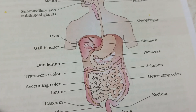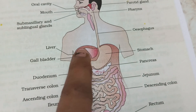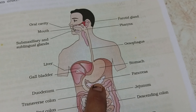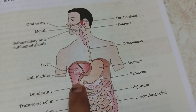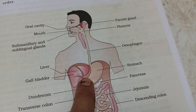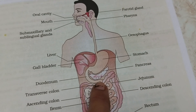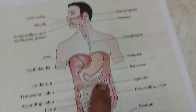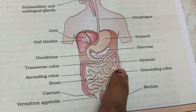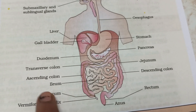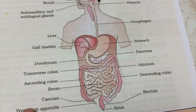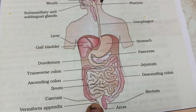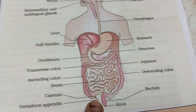Then the esophagus, liver — the associated glands are the salivary glands, liver, and pancreas. This is the stomach, and then the duodenum which is U-shaped. Then the small intestine, large intestine, jejunum, descending colon, rectum and anus, cecum, and the vermiform appendix — a finger-like structure that is vestigial.